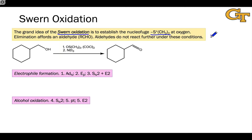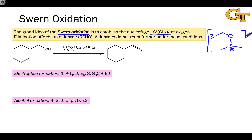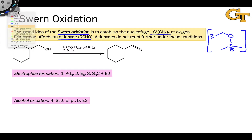We want to set up an intermediate — for example, from a primary alcohol — where we have this S-dimethyl group with a positive charge on sulfur attached to oxygen. Cleavage of the O-S bond toward sulfur would leave sulfur neutral, making it a great leaving group. Once we've established this intermediate, elimination gives an aldehyde. Aldehydes don't react further under these conditions since we can't reestablish the dimethyl sulfide leaving group at the aldehyde oxygen. The net result of the SWERN oxidation on a primary alcohol is an aldehyde; it's also effective for converting secondary alcohols into ketones.